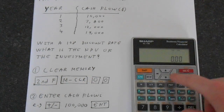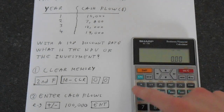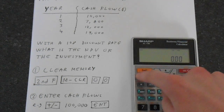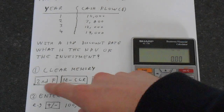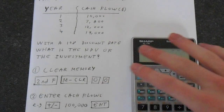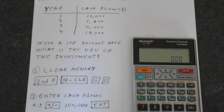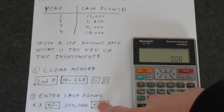First step, as always, we need to make sure all the memories are cleared. The best way to do this is mclear — second function, mclear, 0, 0. Memory is cleared, so previous calculations won't affect this calculation.